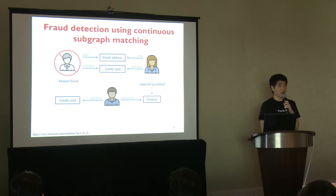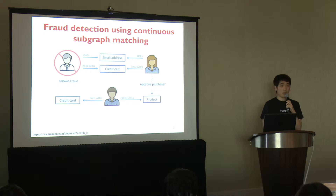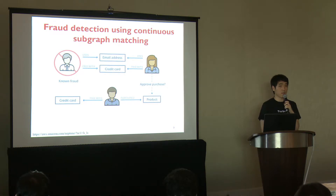With graph data, we can use relationships to process financial and purchase transactions in real-time to easily detect fraud patterns. Continuous subgraph matching can help detect relationship patterns like multiple people associated with a personal email address, or multiple people sharing the same IP address but residing in different physical addresses.